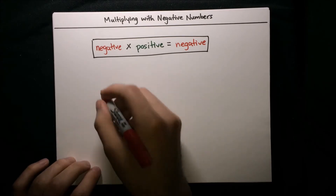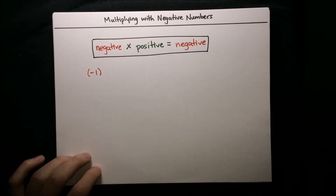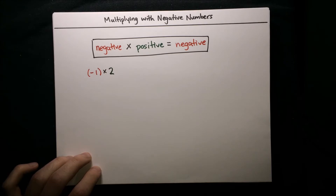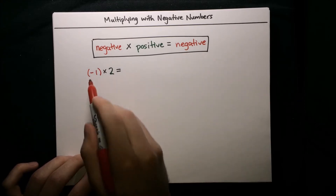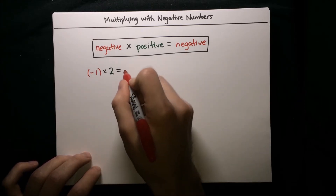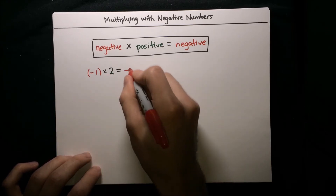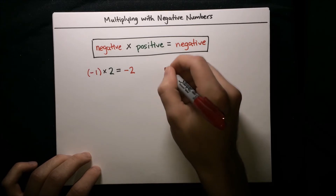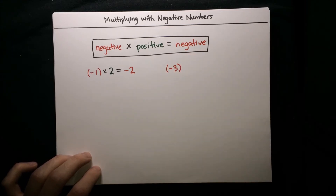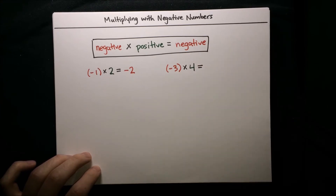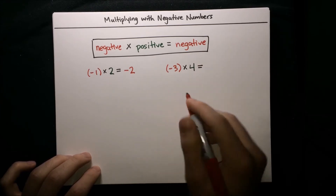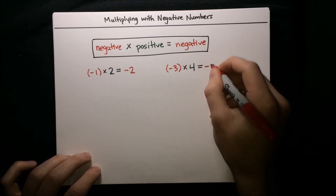For example, if we take negative 1 and multiply it by positive 2, the result is the same as regular 1 times 2 except we're going to have a negative on it, so the result will be negative 2. Another example: if we take negative 3 and multiply it by positive 4, the result is just regular 3 times 4 with a negative in front — negative 12.